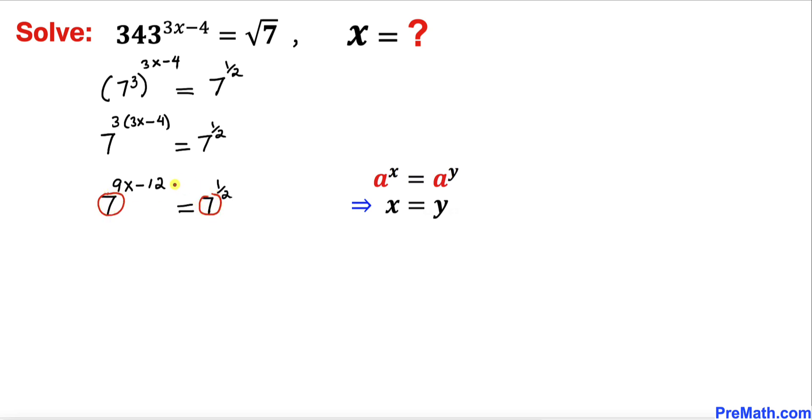So therefore we can equate their exponents as well according to this basic property. So therefore we can write this as 9x minus 12 equals to 1 over 2.